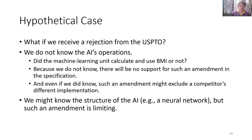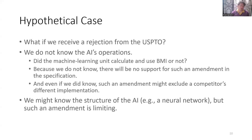If we receive a rejection from the USPTO, we don't really know the AI's operations — did the machine learning unit calculate and use BMI or not? We don't know, and because we don't know, there will be no support for such an amendment in the specification. Even if you did know, such an amendment might exclude a competitor's different implementation. Maybe we say yes, we use BMI — but a competitor might just avoid implementing it with BMI. And claiming the structure of the AI, such as a neural network, is also limiting — what if the accused infringer uses a different machine learning structure like random forest?